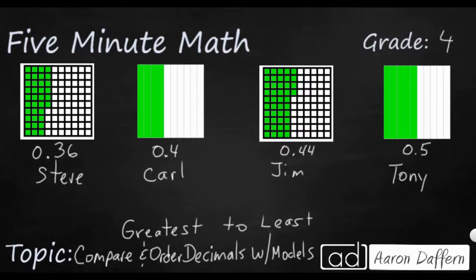So we have a new situation here. We have 4 boys with 4 different amounts, and as you can see, they're each less than a whole. Steve and Jim have amounts to the hundredths place, where Carl and Tony have amounts to the tenths place. We need to put them in order from greatest to least.